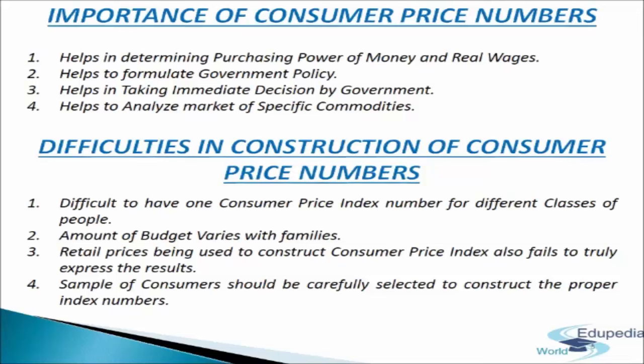First, as different sections of society have different standards of living, it becomes difficult to have one consumer price index number for different classes of people. Every household has a different budget because the proportion of expenditure incurred on a given basket of goods varies from family to family. The habits, tastes, and preferences of consumers keep changing, and the ratio of expenditure on different commodities at different points of time and by various persons differs, creating difficulty in construction of cost of living index numbers.